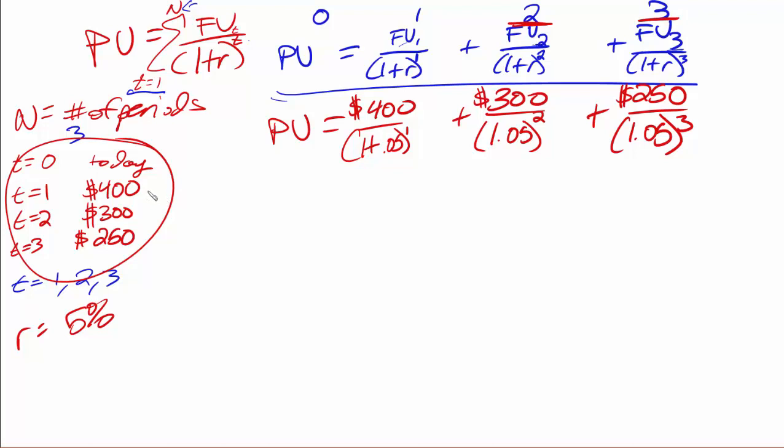What we're doing on all of these payments is that we are bringing the value of that payment back until today. It's 1 time period from today we receive $400. It's 2 time periods from today we receive $300. And it's 3 time periods from today that we receive $250.